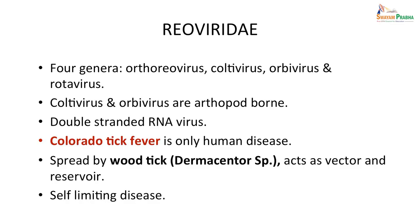Reoviridae has four genera: orthoreovirus, coltivirus, orbivirus, and rotavirus. Only orbivirus is arthropod-borne — it is a double-stranded RNA virus. It causes Colorado tick fever, spread by the wood tick Dermacentor andersoni, which acts as both vector and reservoir. It is a self-limiting disease.